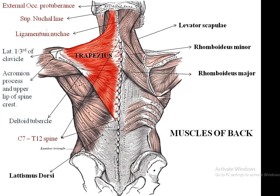Now let us see the attachments of the latissimus dorsi. Latissimus dorsi originates from the posterior one-third of the outer lip of the iliac crest, from the lumbar fascia, from T7 to T12 spines, from the lower four ribs, and from the inferior angle of the scapula.